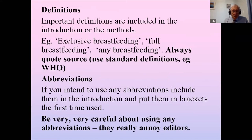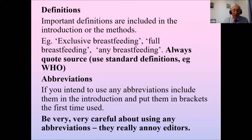For example, if you're writing about breastfeeding — a topic in which I've published about 200 papers — it's important to define exactly what you are talking about, always quoting a source and using a standard definition. If you invent your own definition, it will be at your peril. Don't use abbreviations — they really annoy editors. I only allow my PhD students to use two abbreviations: BMI, because everybody knows it, and kg for kilogram. If an editor comes across a strange abbreviation late at night, they are just as likely to throw your paper in the rubbish bin.